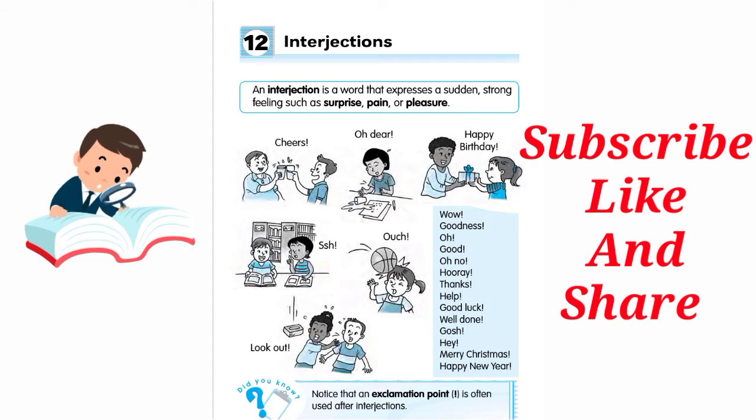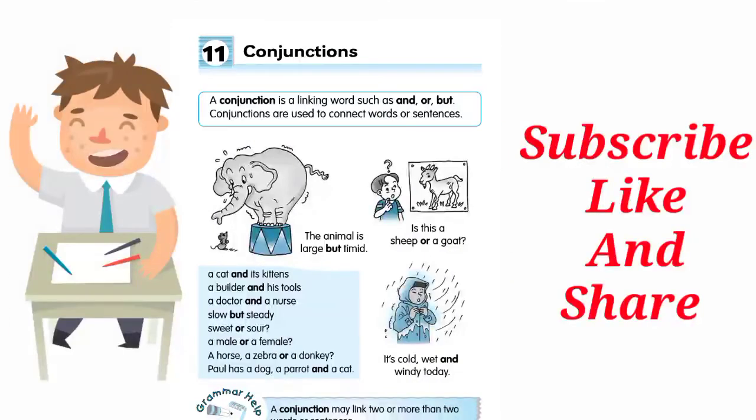Next is a conjunction. A conjunction is a linking word such as and, or, but. Conjunctions are used to connect words or sentences.